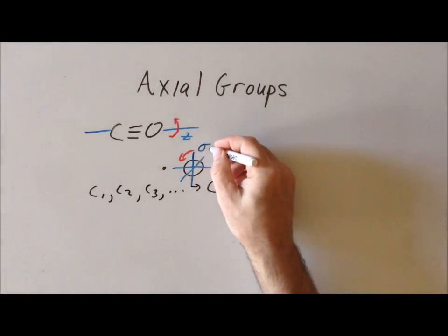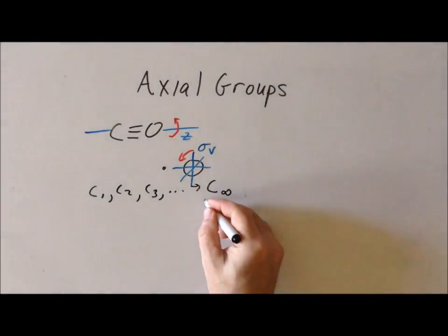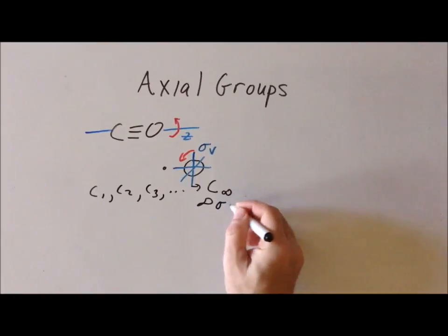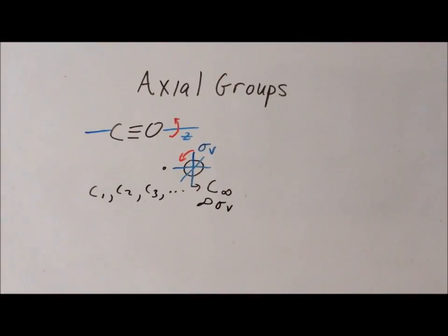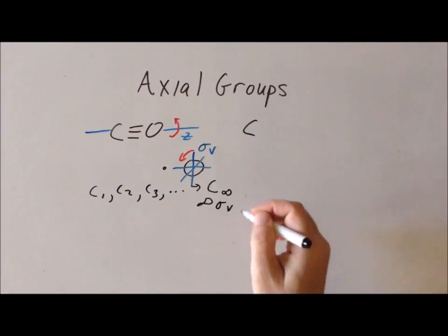So you notice that among the symmetry operations for carbon monoxide, not only do we have this C infinity high order rotation axis, you also have an infinite number of sigma Vs. And because you have a high order rotation axis and we have these particular Vs, that's going to lead to our terminology of describing this particular group as C infinity V.